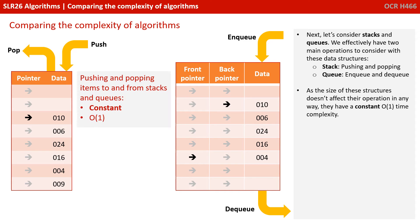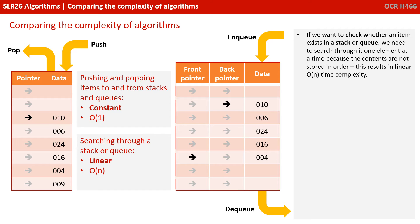Next, let's consider stacks and queues. We effectively have two main operations to consider with each structure. With stacks, it's pushing and popping, and with queues, it's enqueuing and dequeuing. As the size of these structures doesn't affect their operation in any way, these operations once again have a constant O(1) time complexity. If you want to check whether an item exists in a stack or queue, we need to search through it one element at a time because the contents are not stored in order. This therefore results in a linear time complexity.